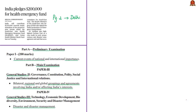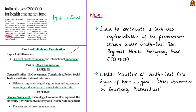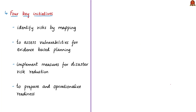The next article is about the Southeast Asia Regional Health Emergency Fund. The WHO Regional Committee for South-East Asia met in New Delhi for its 72nd session. India's Union Minister for Health and Family Welfare announced India will contribute 2 lakh US dollars towards implementation of the preparedness stream under the Southeast Asia Regional Health Emergency Response Fund. The session adopted the Delhi Declaration on Emergency Preparedness.